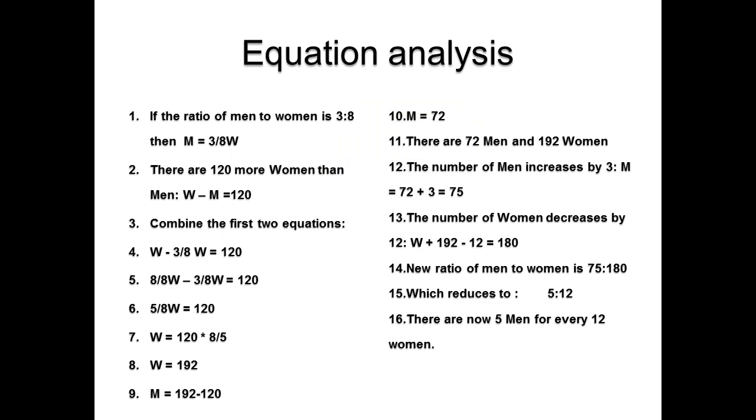This slide is to show our process and explain the process a little bit better. We came up with two equations, one for men and one for women. Then we combined and we solved for numbers. We knew the difference of the numbers was 120, so we worked with the numbers until the difference was 120. Then we added 3 to men and subtracted 12 from women, which gave us 75 to 180, which reduces to 5 twelfths.